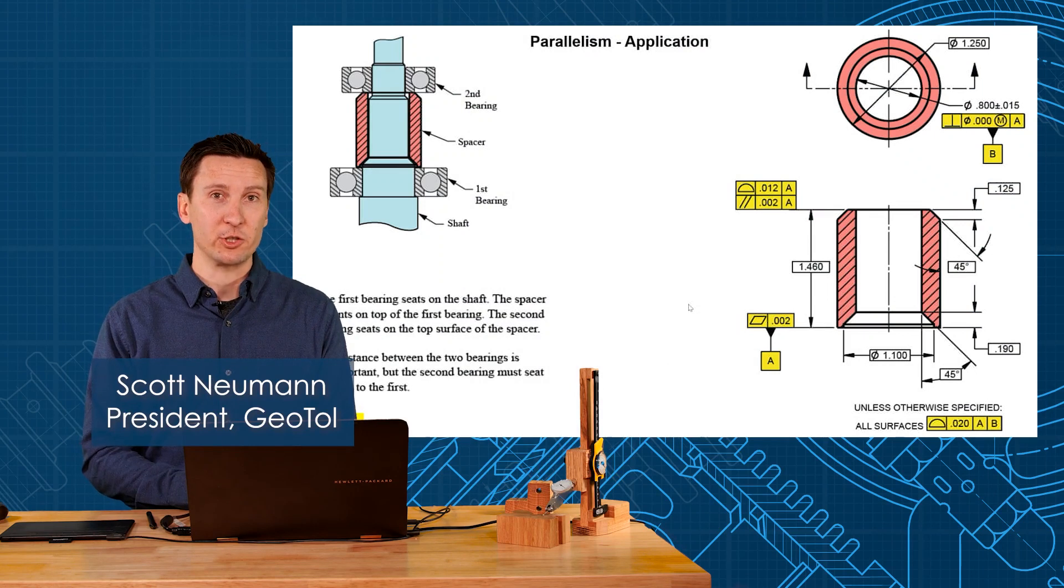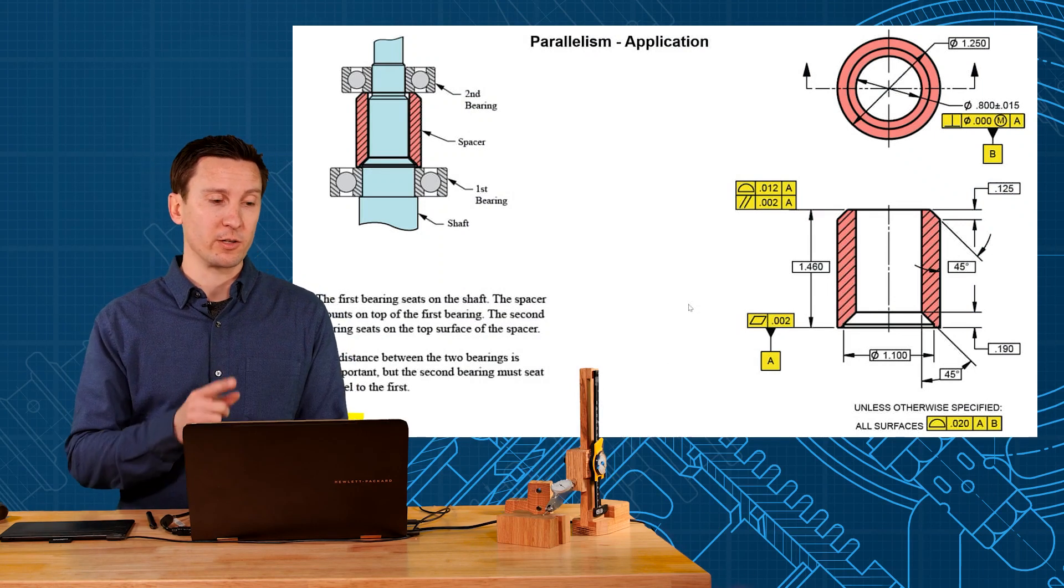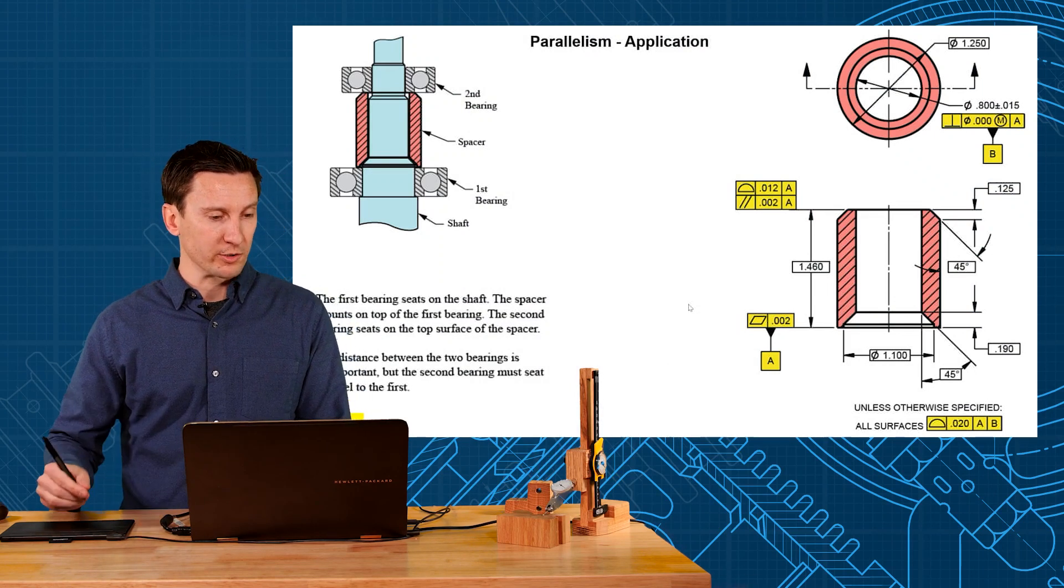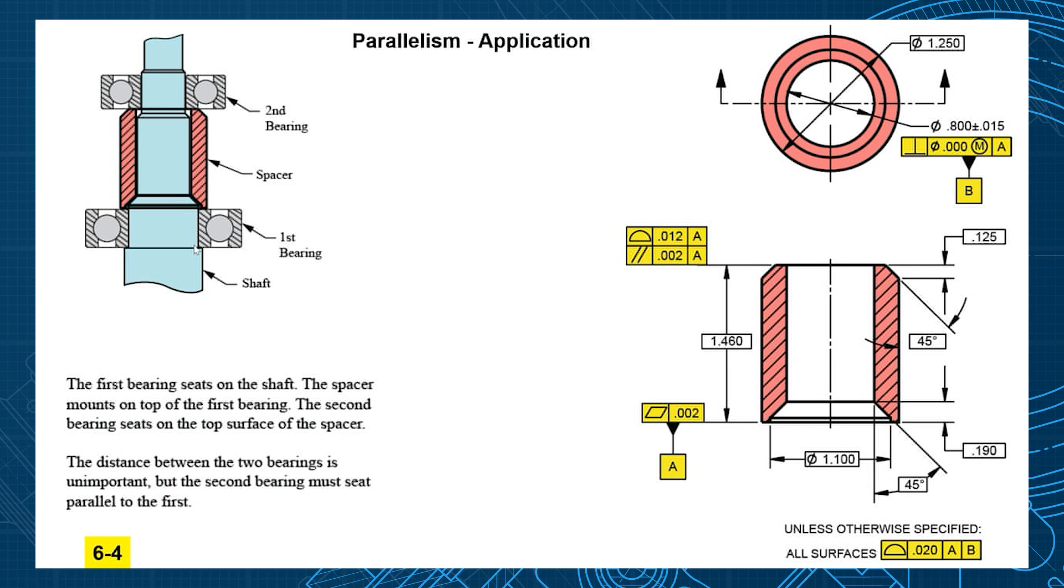Now we're going to show parallelism application and how it's used with a profile tolerance. First, here's how the part works. The assembly starts with a blue shaft, and we put the first bearing over the top, and that bearing is going to seat on this shoulder at the bottom.